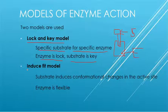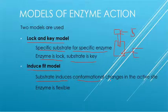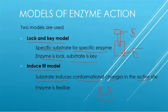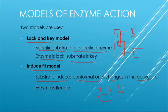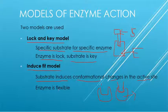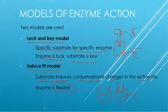The other model used to explain enzyme action is known as the Induced Fit model, proposed in 1959 by Koshland. This model suggests that the substrate induces conformational changes in the active site. For example, if a substrate needs to bind to the active site, the active site may change its shape to help the substrate bind. According to this model, the enzyme is very flexible.